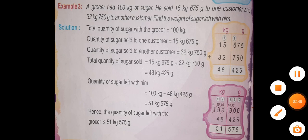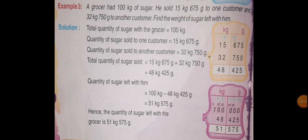Then, Example 3. A grocer had 100 kg of sugar. He sold 15 kg 675 g to 1 customer and 32 kg 750 g to another customer. Find the weight of sugar left with him. So, total quantity of sugar with the grocer is equal to 100 kg.